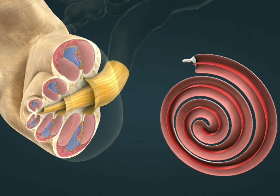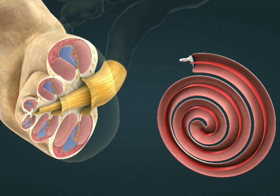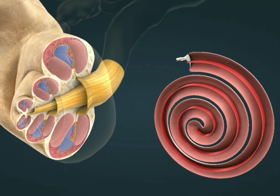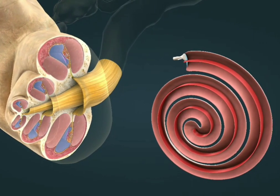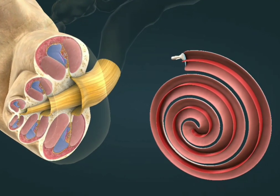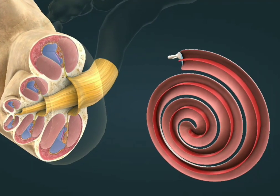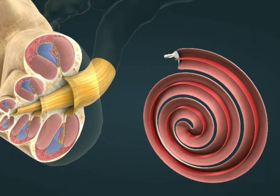When a vibration is absorbed, an electrical signal is produced, which is transmitted into the brain. The pitch of the sound is encoded by the site of absorption. This is called tonotopy.